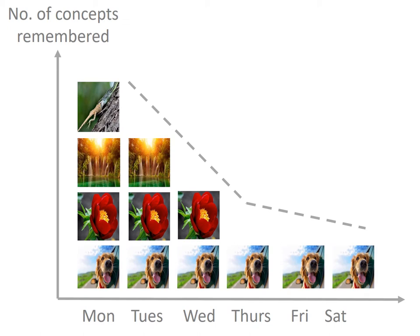Unsurprisingly, memories tend to subside over time — called the forgetting curve. This forgetting curve is often steeper than we predict. In only a couple of days, the number of topics you remember, or the likelihood that you remember a specific concept, could even halve, and therefore subside faster than you might expect.